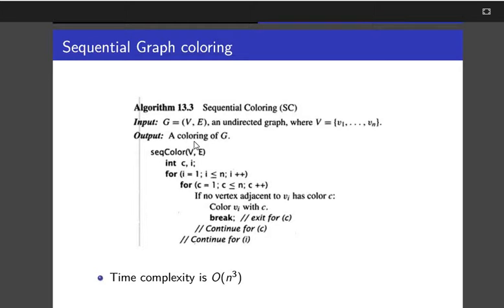Suppose we have a given graph with given edges and vertices, and we need to see how we can color the vertices. In sequential graph coloring, as we see the name, sequential means one after the other. We don't color everything all at once. We color one after the other in a sequence.